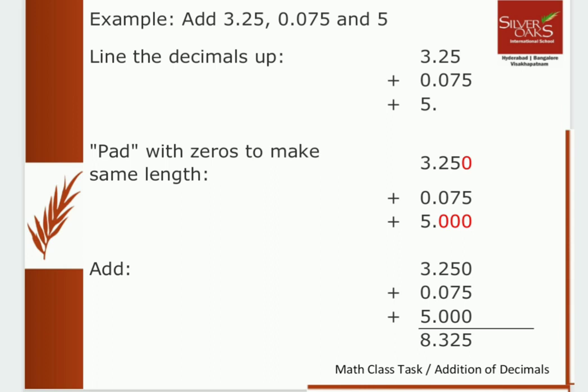We follow the steps as usual. Line the decimals up. Then pad with zeros to make the same length. So the first number 3.25 doesn't have an extra zero in the thousandths place, so we add a zero. The whole number 5 does not have any decimal part, so we add all three zeros. Then add using the normal column method. The final answer is 8.325.